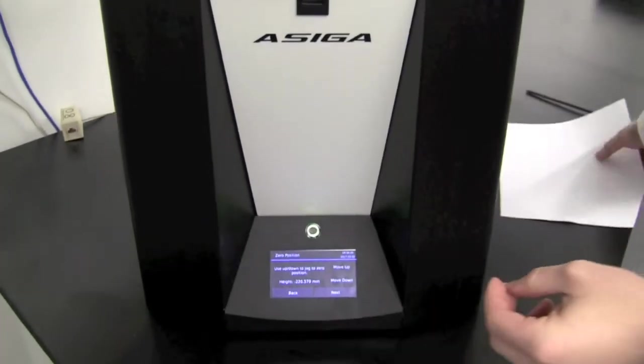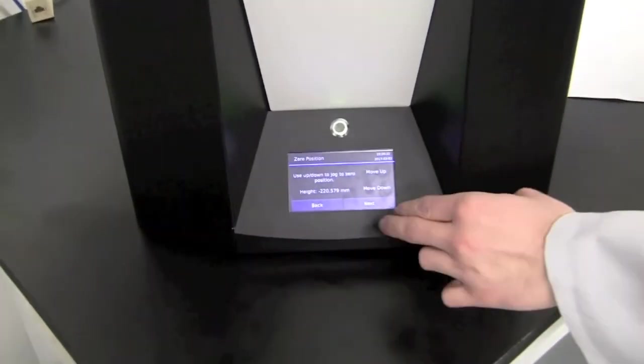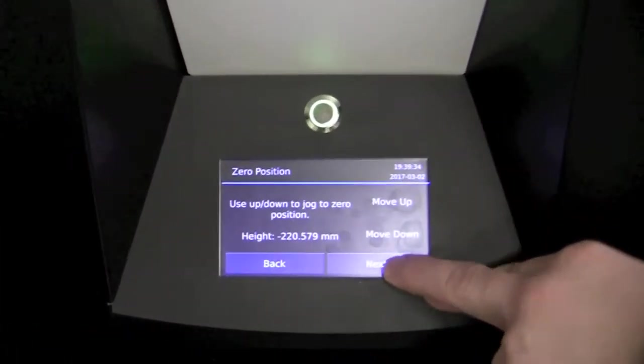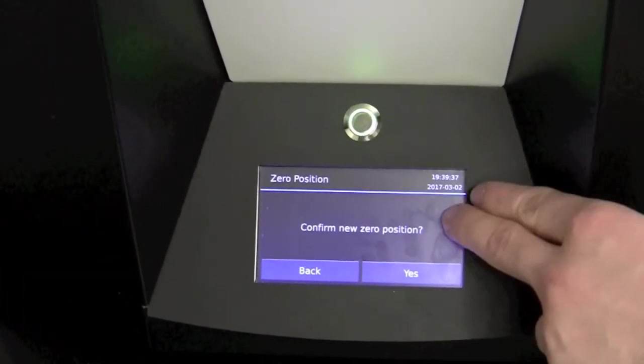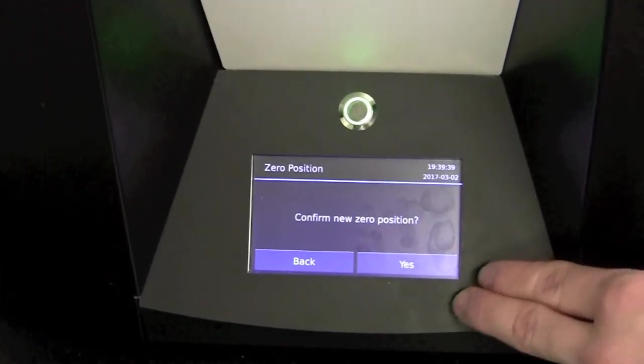At this point in time, we will remove the piece of paper. We will select next on the screen. It is going to ask us to confirm the new zero position. We will select yes.